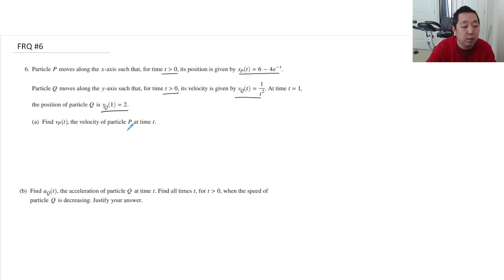Find Vp, the velocity of particle P at time t. So Vp is going to be equal to the derivative of the position. That's going to be derivative of 6 to 0. It'll be negative 4e to the negative t, then by chain rule negative 1. So that's 4e to the negative t. Just taking the derivative of that.